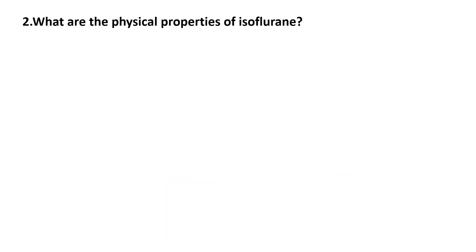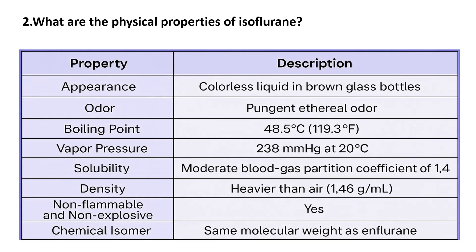What are the physical properties of isoflurane? Isoflurane is a colorless liquid at room temperature and is stored in brown glass bottles to protect it from light. It has a pungent, ethereal odor, which can irritate the airway, making it less ideal for inhalational induction.